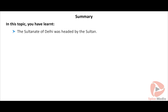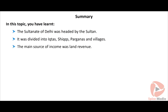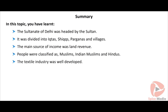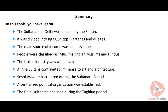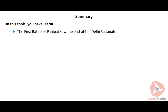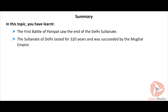The Delhi Sultanate started declining during the reign of the Tughlaqs. Timur's invasion led to further decline. Sultans of the Syed and Lodi dynasties were ineffective and weak. The Vijayanagar and Bahmani kingdoms became independent of the Sultanate. Kandesh, Bengal, Sindh, Multan, Gujarat, Malwa, Jaunpur, Kashmir, Assam and Orissa soon established their independence. The first battle of Panipat in 1526 AD saw the end of the Delhi Sultanate. The Delhi Sultanate was in power for about 300 years from 1206 to 1526 AD and was succeeded by the Mughal Empire.